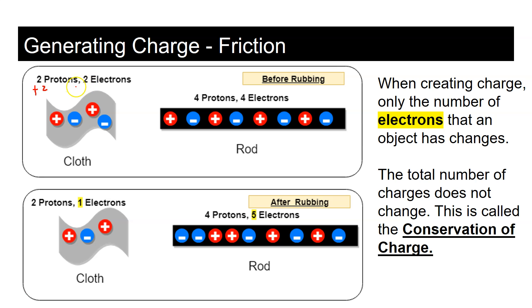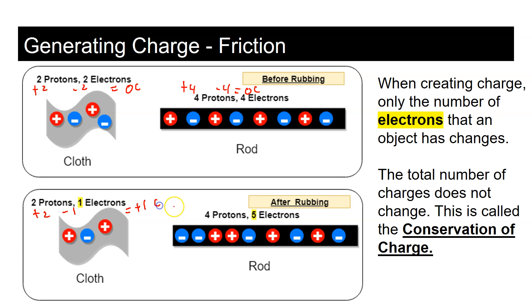The cloth has positive two, negative two — total zero. The rod has positive four, negative four — total zero. When they rub together, the rod steals an electron from the cloth. Now the cloth has positive two, negative one — a net charge of positive one Coulomb. And the rod has positive four, negative five — a net charge of negative one Coulomb.